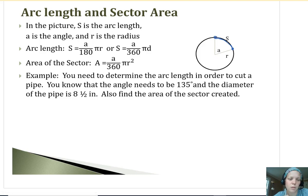So A is the angle, R is the radius, D will be the diameter. There's one version that has the diameter. So to figure out this example, we're going to determine the arc length in order to cut a pipe. Maybe we have to do a cut here and here. We'd have to use like a soft tape measure to figure out how far that needs to go. So we know the angle needs to be 135 degrees. The diameter of the pipe is eight and a half.